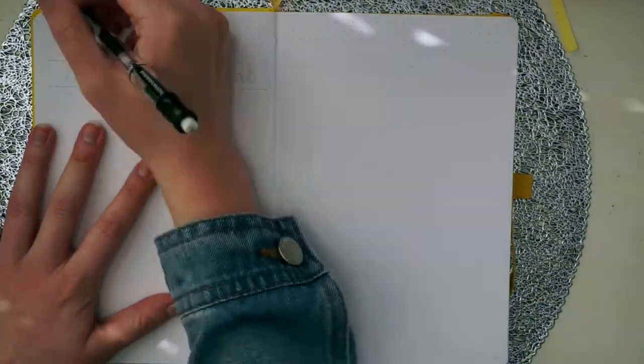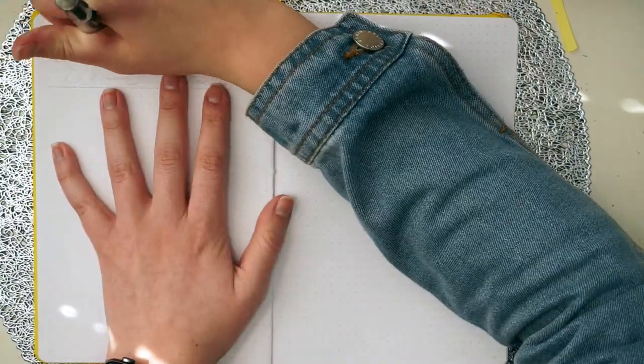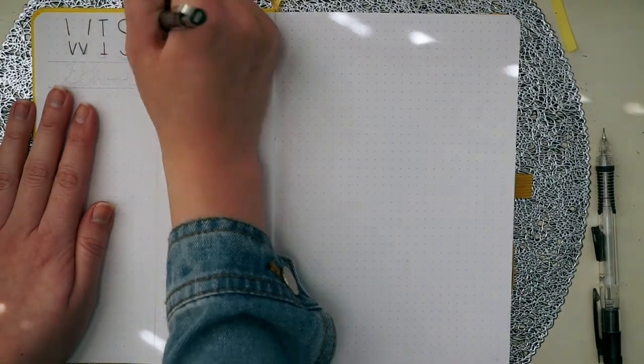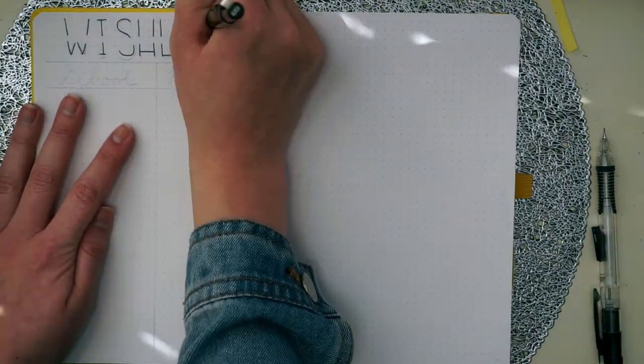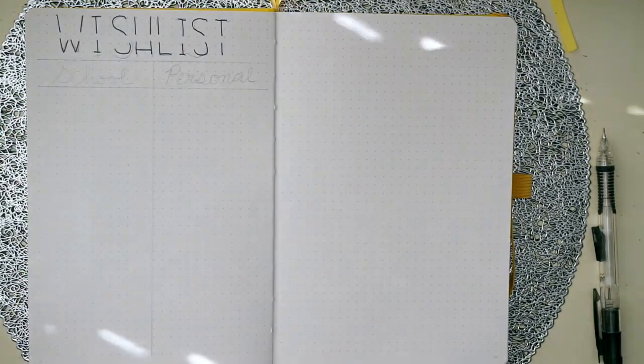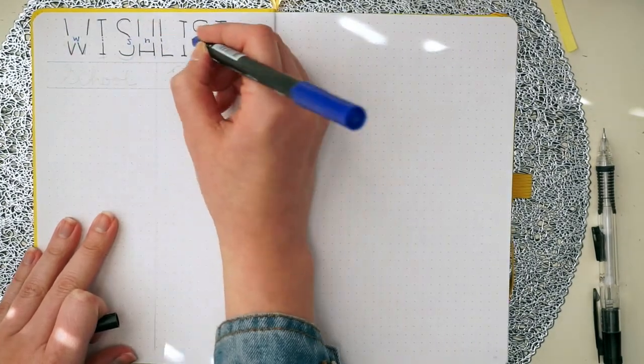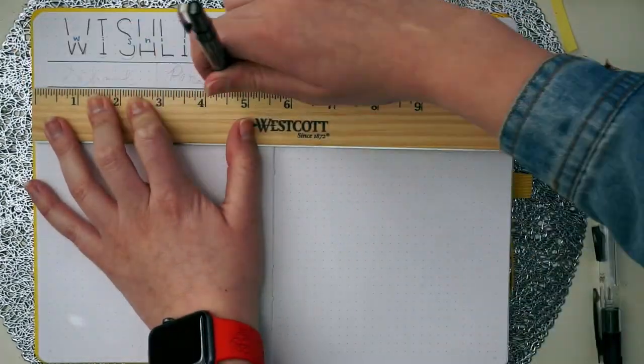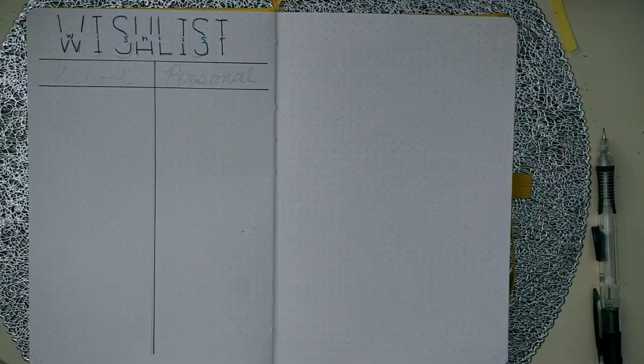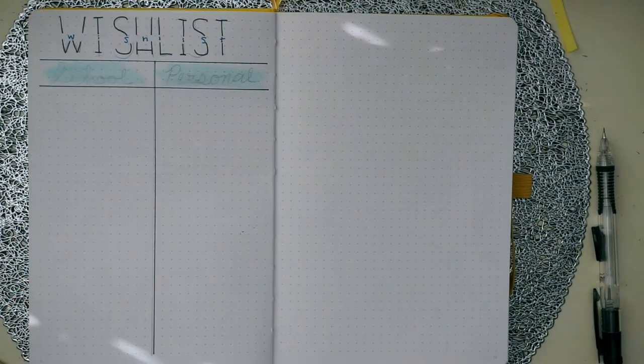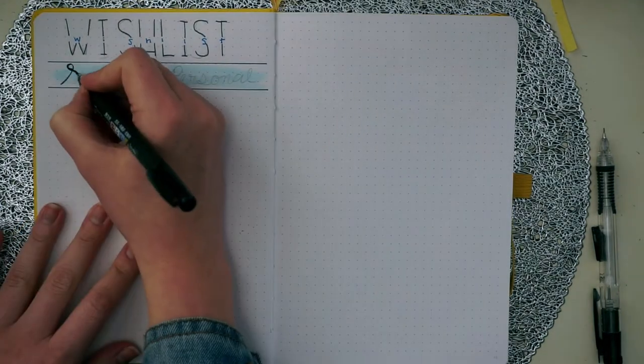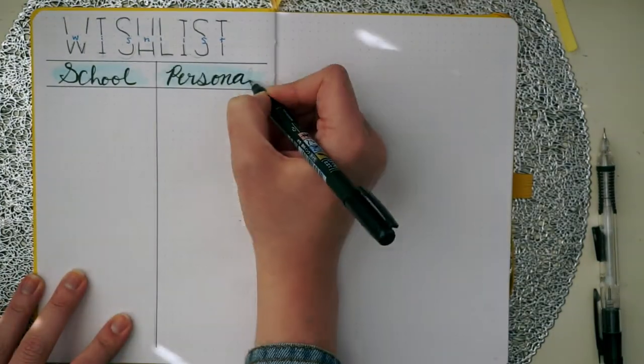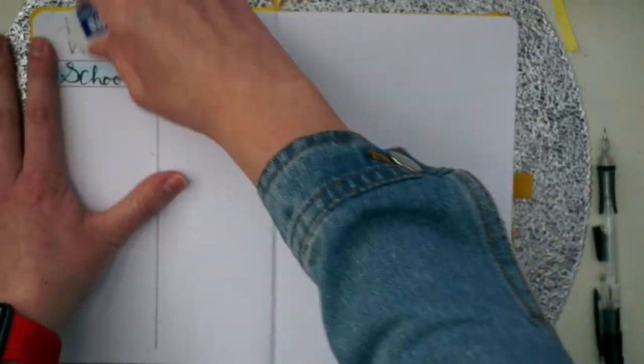We are on to the last spread which is my wishlist spread. In this I have two different categories which is school and personal. I'm not really sure how to describe this lettering that I'm doing but it's most of the word and then there's one row that's taken out so I can write the letters smaller there. Then I am separating out those two columns and using a light pastel color to do a background color and using my Tombow Fudenosuke pens to write school and personal.